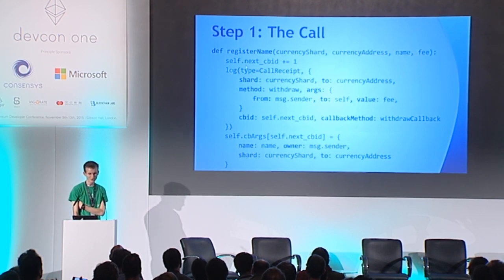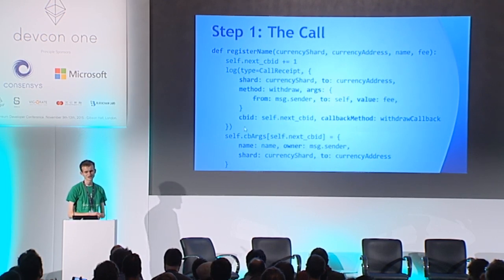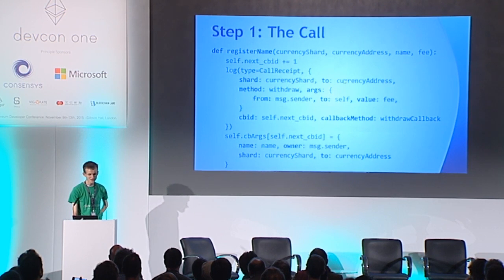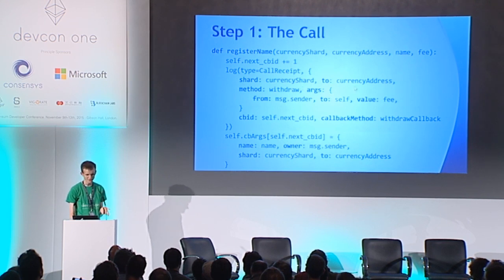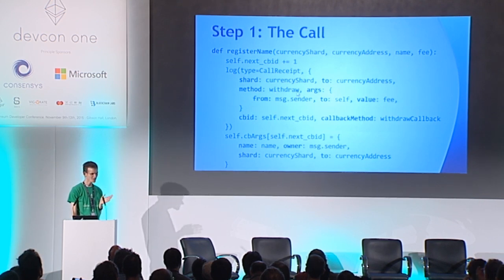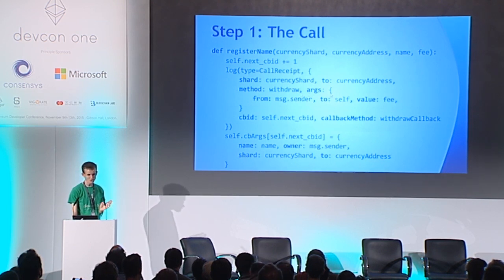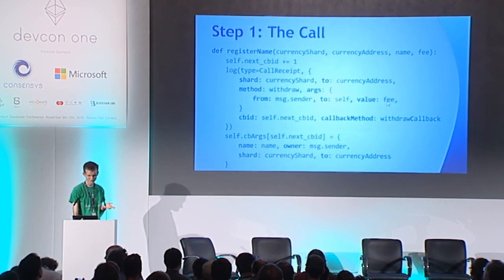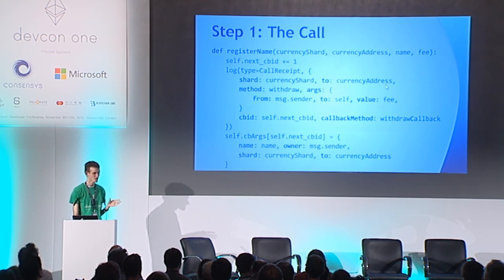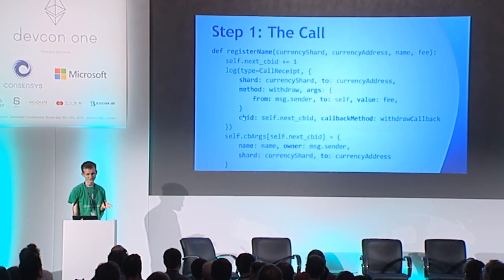What we're going to do is call the function of the name registrar — we want to register a domain with some name, provide the fee, and provide the currency shard and currency address (basically where Gafcoin lives). It's going to register a callback ID and create a log containing all the information: the destination shard, destination address (addressed to Gafcoin), what method is being called (withdraw), and the arguments — from me to the name registry, the value 20 Gafcoin — along with a callback method (withdraw callback) and the callback ID.